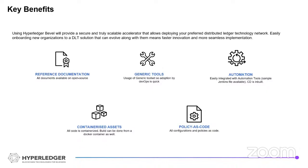Other key benefits include extensive reference documentation — we're also running a mentorship program to enhance it further. The solution uses generic tools for quick adoption by DevOps teams, and automation can be easily plugged into CI tools such as Jenkins or GitHub Actions. The source code can be run from a containerized environment, and most configurations — including the network YAML and DLT-related configurations — are created as code, so policies and configurations can be managed through code itself.